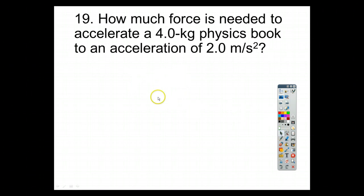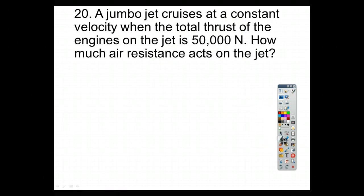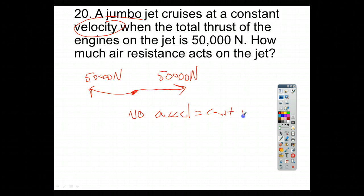And then finally, for number 20, we have a jumbo jet cruising at a constant velocity with the total thrust of the engines is 50,000. How much air resistance acts on this jet? Well, if the jet's going this direction and has a force of 50,000 newtons, and it's moving at a constant speed, so here constant velocity is important, we know that the air resistance has to be acting in the opposite direction at 50,000 newtons, so there's no acceleration here, and that means that it has a constant speed or velocity. And that is number 1 through number 20.